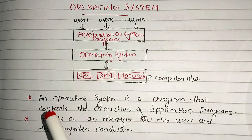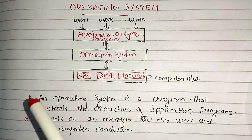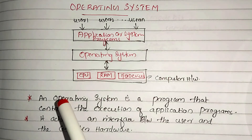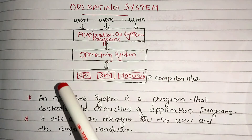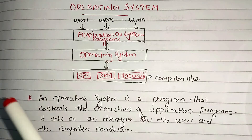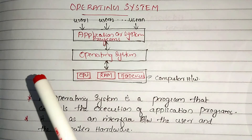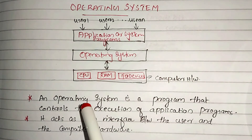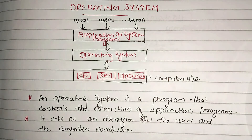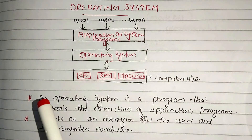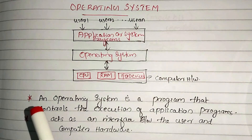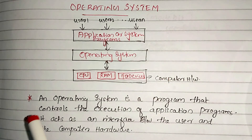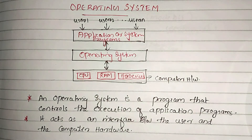The user will access it. When the user saves a document, the operating system helps store the data to the hardware. Without the OS, directly accessing the hardware would be a very difficult and tedious task — the operating system solves this.